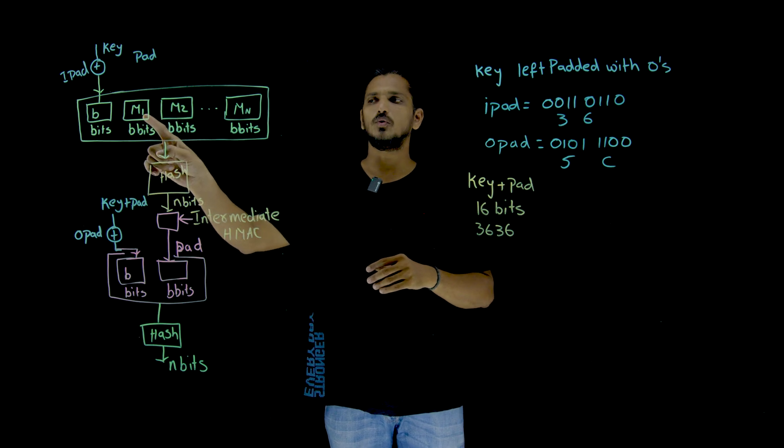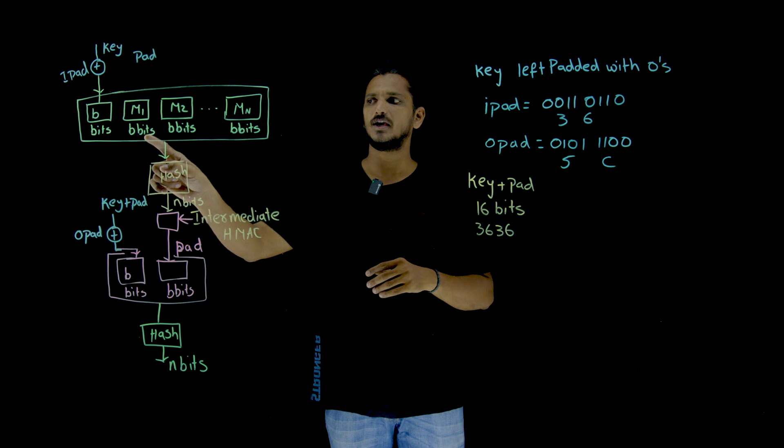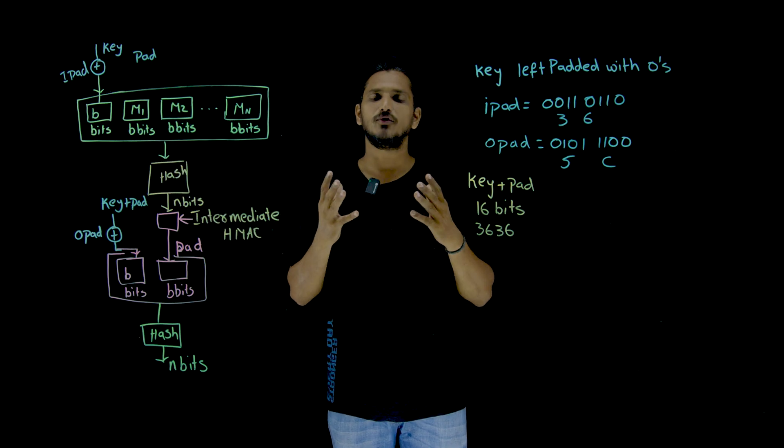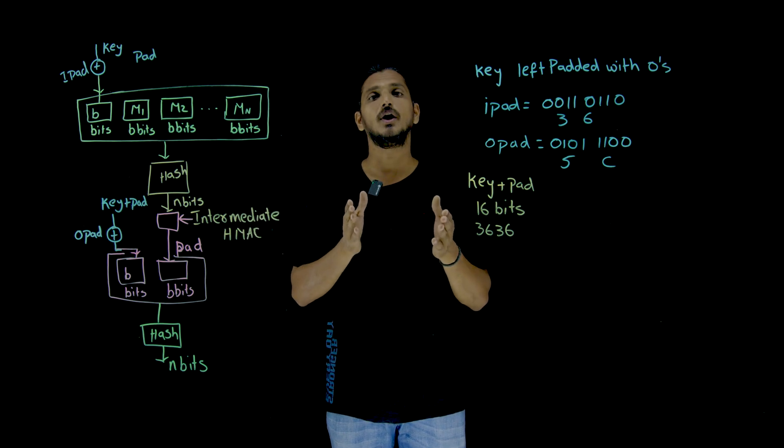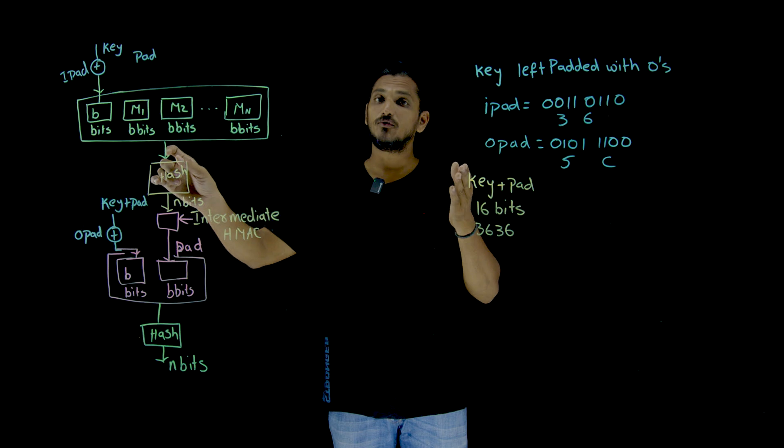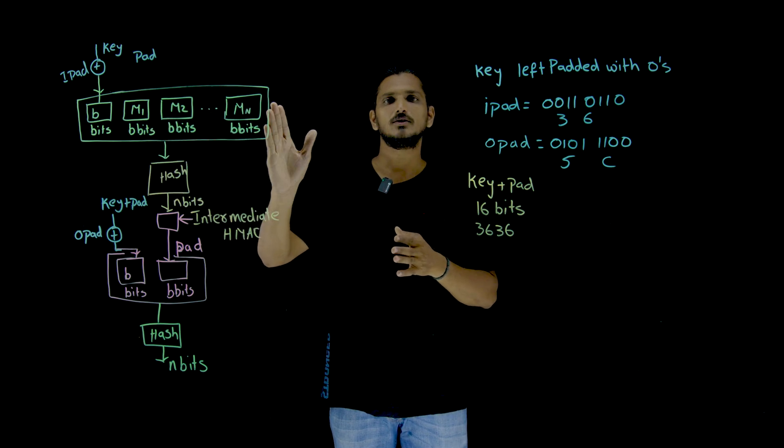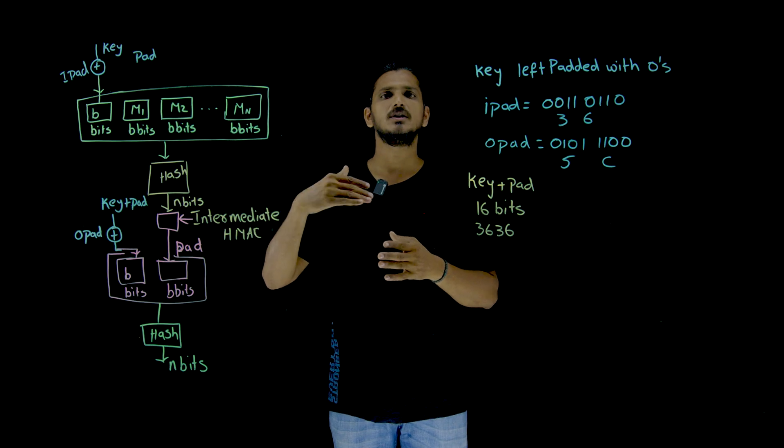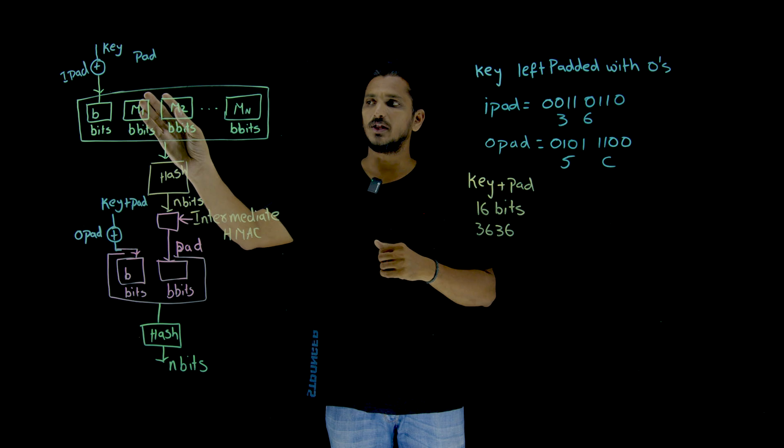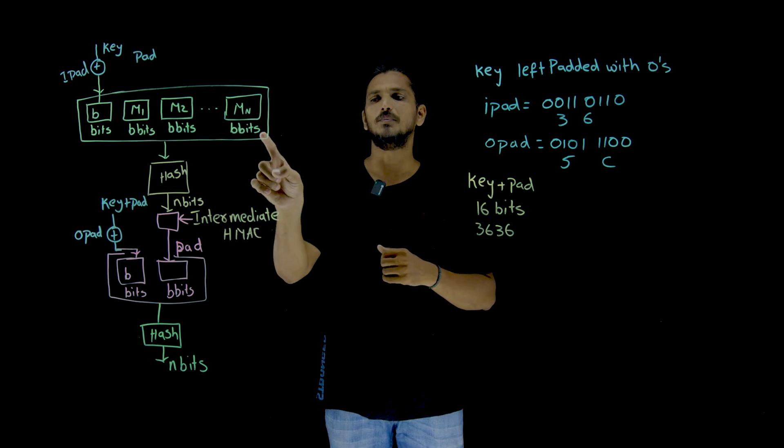message is divided into n blocks, each of it having b bits. Suppose if your message is 256 bits, if it is divided into b, assume that it is 16 bits. 256 divided by 16 means total how many blocks it is going to get. So 256 divided by 16, those many blocks you are going to get.